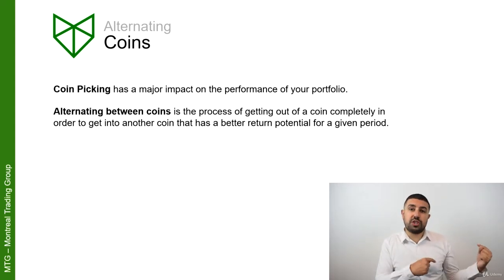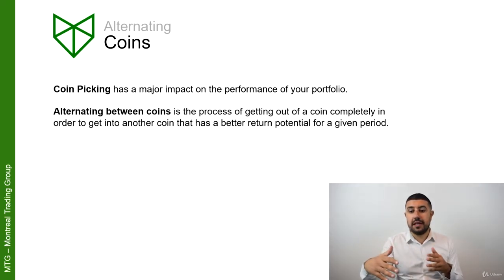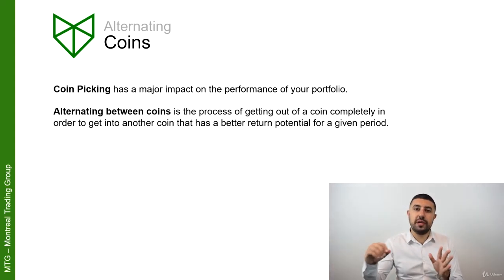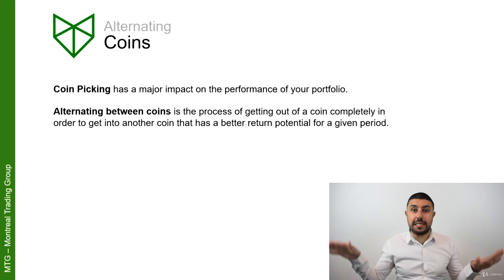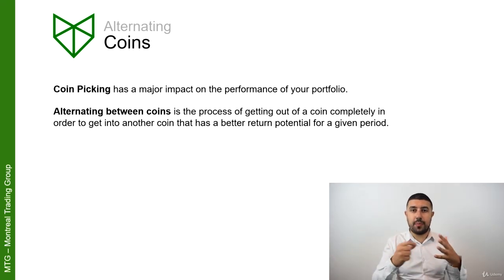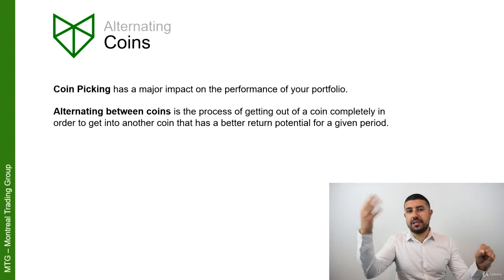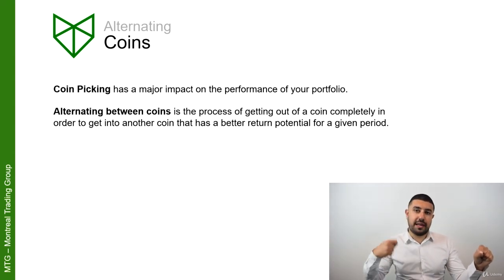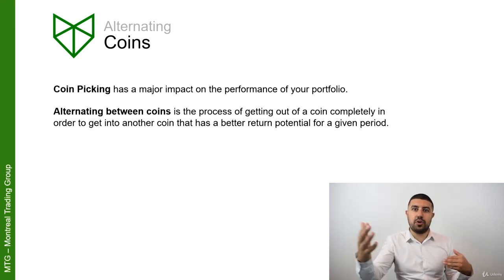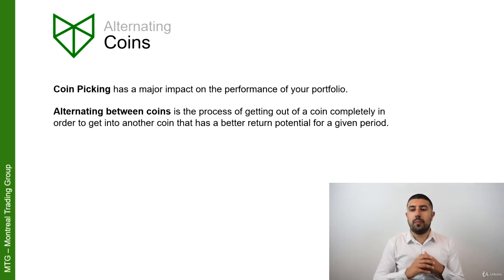There's this other project that you really like, that you think is very solid, and they have a lot of upcoming events during the next six months and they're releasing some new things. So you get out of the first one completely — you change your coin selection in your asset allocation and add this one instead. That will have a huge impact, because the other one might have a really slow time after, and by getting out of it completely and putting the funds into something with a better prospect for the upcoming period, that just helps your portfolio by so much.